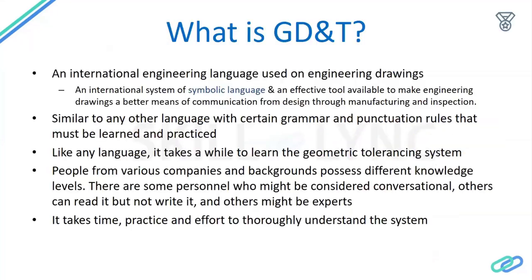To start with — what is GD&T? GD&T stands for Geometric Dimensioning and Tolerancing. It is an international engineering language used particularly on engineering drawings. In other words, it is an international system of symbolic language and an effective tool to make engineering drawings a better means of communication, starting from design through manufacturing and inspection.